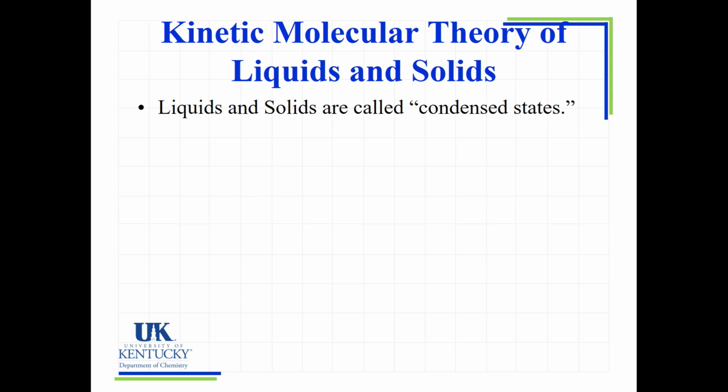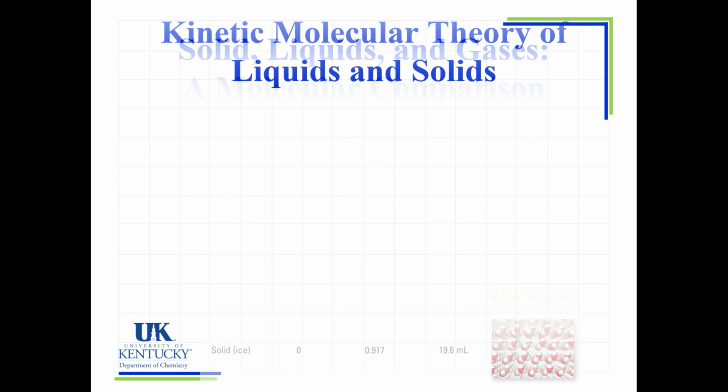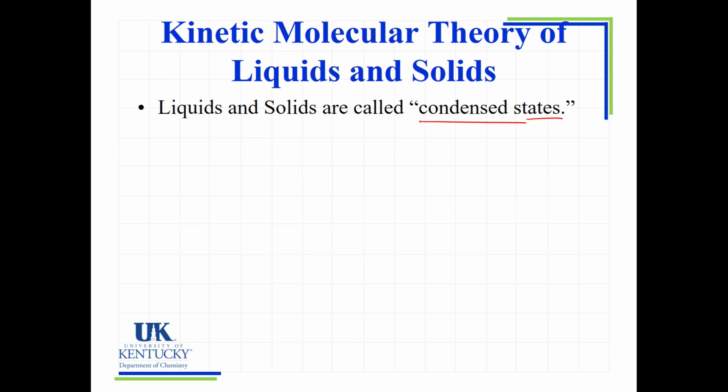So what's going to make the difference between these things? We're going to get into the kinetic molecular theory of liquids and solids. We talked about this for gases already. But what we know about solids and liquids is that they're considered the condensed state because they are packed very closely together. Once again, if we go back to what we saw, it's condensed because they're very close together, pushed closely together. There's an attraction that's holding them together we're going to talk about. It's called condensed states.